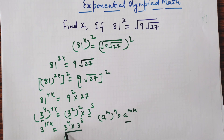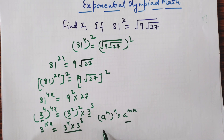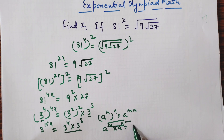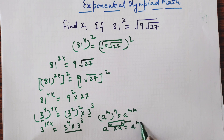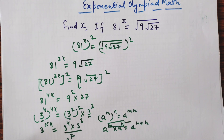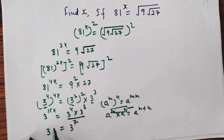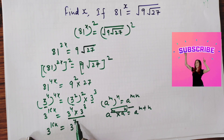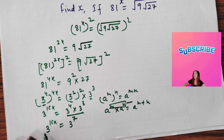Now we are using the law that if the bases are the same, the powers should be added: a^m × a^n = a^(m+n). So we will write 3 power 4 plus 3, which is 7. So the right-hand side becomes 3 power 7. Now on the left-hand side we have 3 power 16x, and on the right we have 3 power 7. The bases are the same.